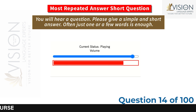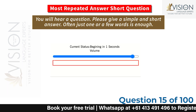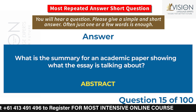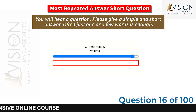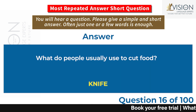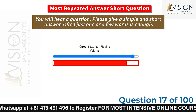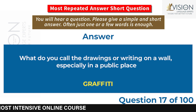What is the name for a person who pays rent to a landlord? Tenant. What is the summary for an academic paper showing what the essay is talking about? Abstract. What do people usually use to cut food? What do you call the drawings or writing on a wall, especially in a public place? Graffiti.